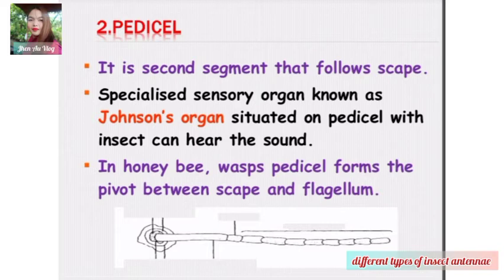The second is the pedicel. It is the second segment that follows the scape. A specialized sensory organ known as Johnston's organ is situated on the pedicel, with which the insect can hear sound. In the honeybee and wasp, the pedicel forms the pivot between the scape and flagellum.